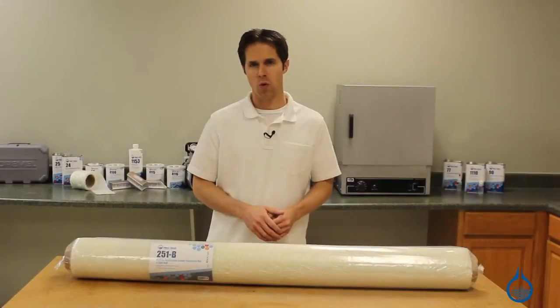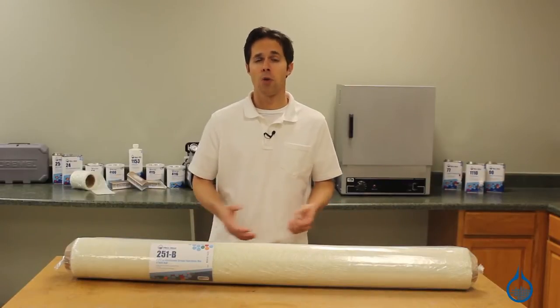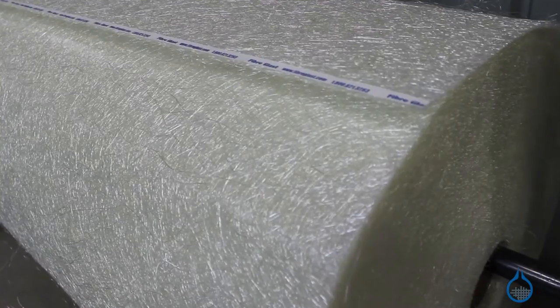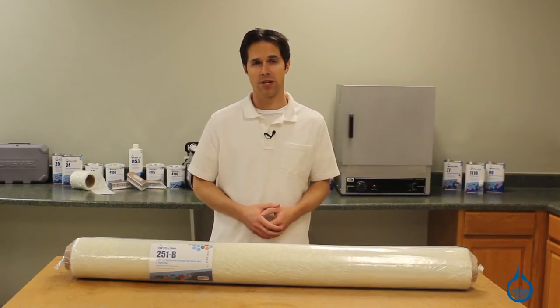This mat, our number 251, is made to be used with resin as part of a composite. In fact, it's ideal for rapid buildup of parts and molds, whether used alone or with other fiberglass fabrics.